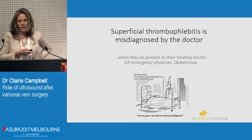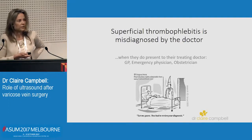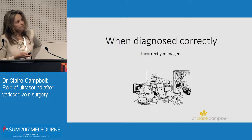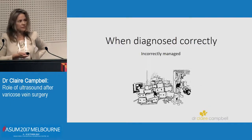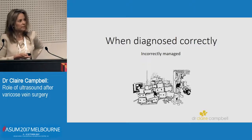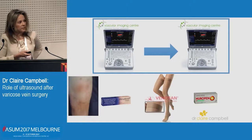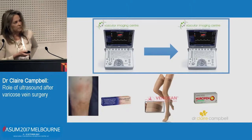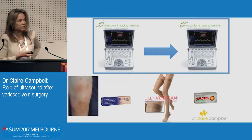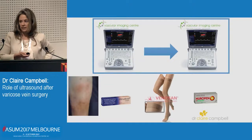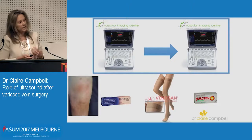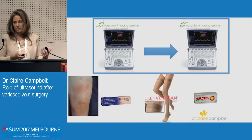Going back to the thrombophlebitis — it's often misdiagnosed by the doctor, and when it is diagnosed correctly, it's not treated properly. The patients need serial ultrasound to check for progression. They need classic thrombophlebitis management, which is periodoid, compression, non-steroidals. And then often they need anticoagulation if it's quite an extensive thrombus, even if it's not near the deep system.